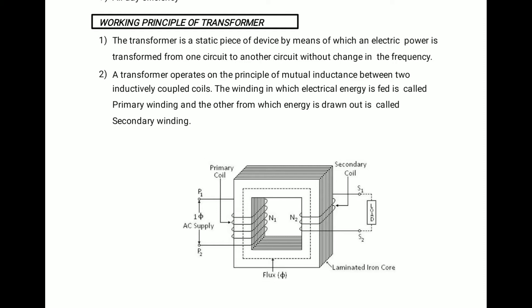The transformer operates on the principle of mutual induction between two inductively coupled coils. The winding into which electrical energy is fed is called the primary winding, shown as P1 and P2, and the winding from which energy is drawn is the secondary winding.